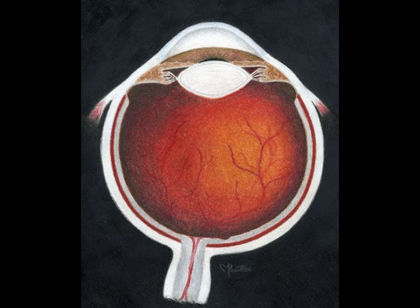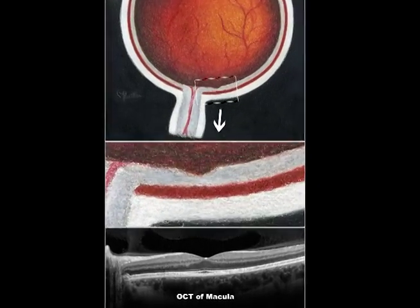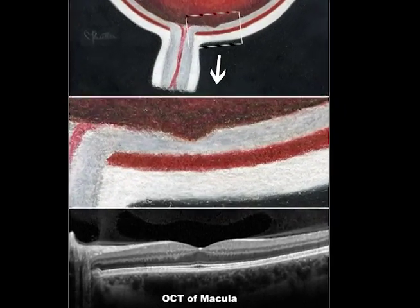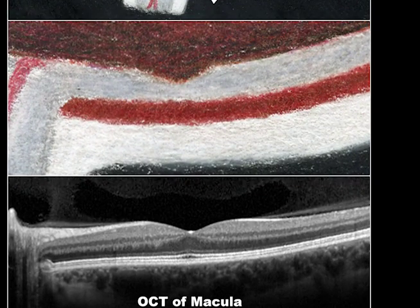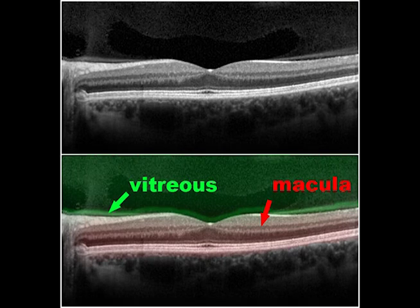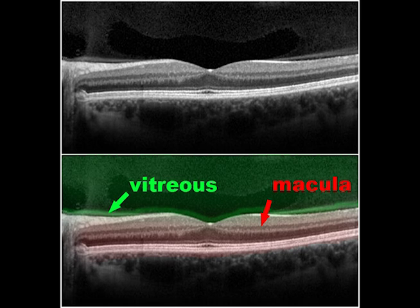Here the eye is looking upward to show how we look at scans of the macula. The macula normally has a central area of thinning. The OCT scan at the bottom of the screen shows an image of the normal macula. The image on top has been modified with color to show the vitreous in green attached to the macula, as normally seen in a young person.